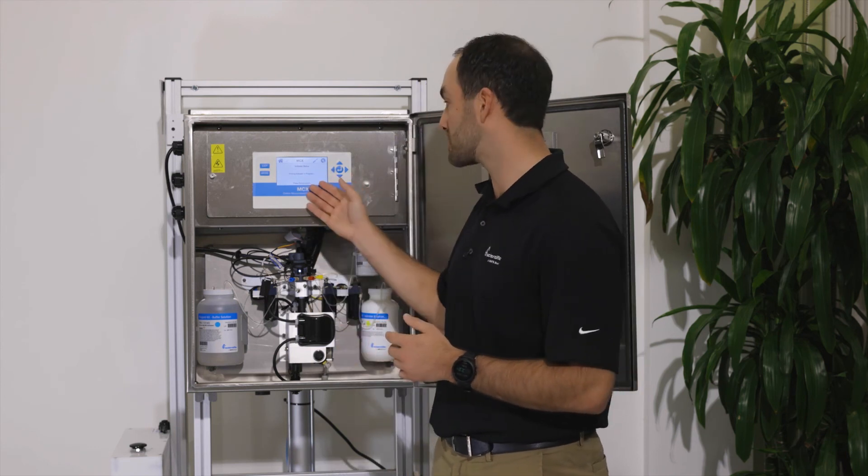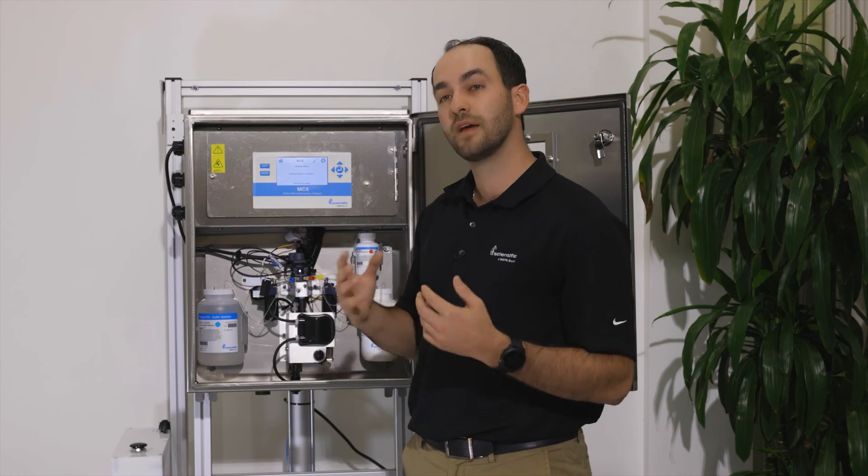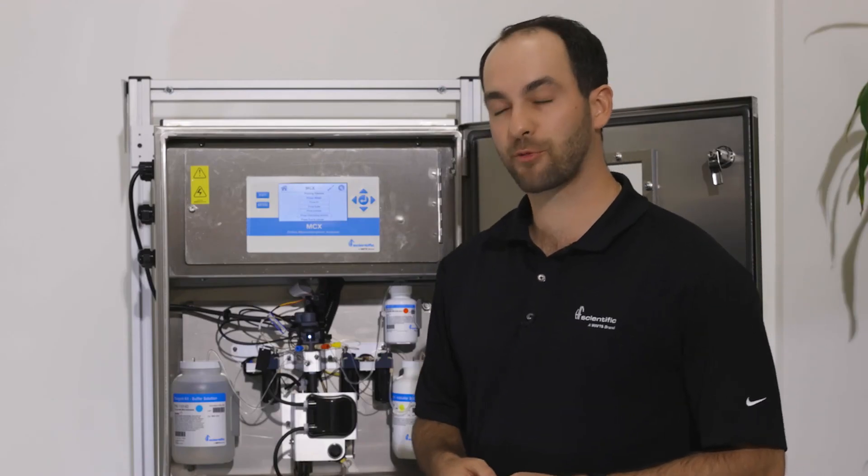So follow the same process, go to the screen, toggle down to prime, and prime the indicator again. After you have primed all three reagents, you can replace the light shield.